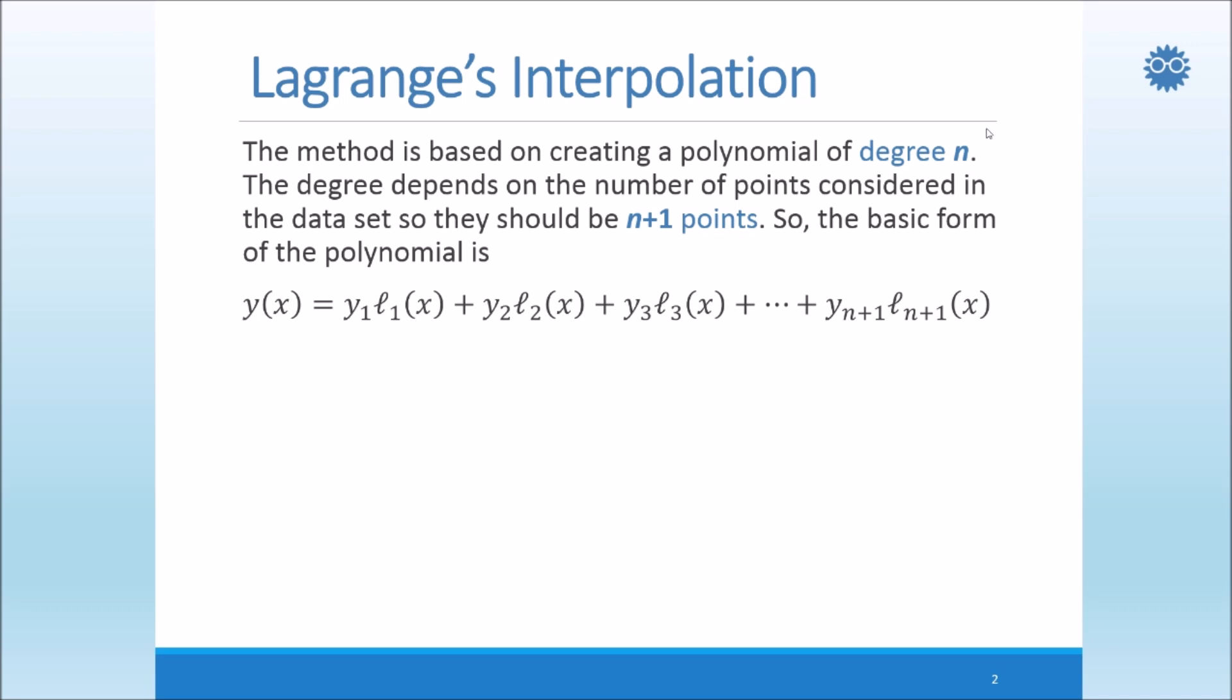The method is based on creating a polynomial of degree n. The degree depends on the number of points considered in the dataset, so they should be n plus 1 points. So that means, for example, if we have 5 data points, the polynomial will be of degree 4. So always the degree of the polynomial is less by 1 than the number of given data points or xy pairs.